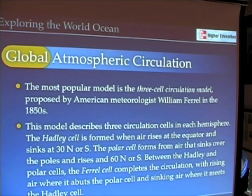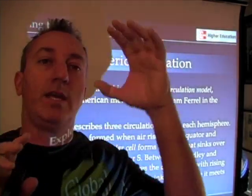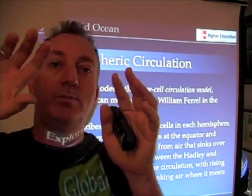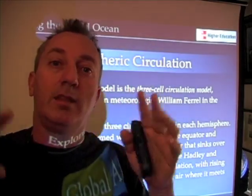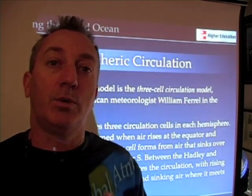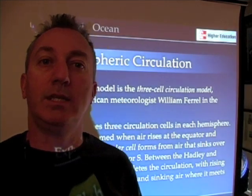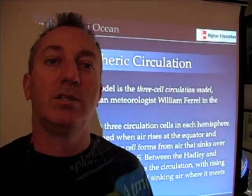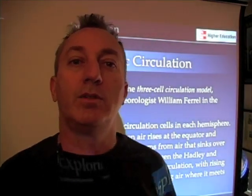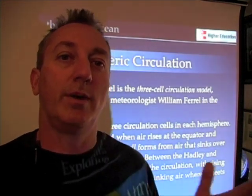This three-cell circulation model describes three regions of the atmosphere with circular motions from the tropics to mid-latitudes to the poles. They interact with each other, driven largely by rising air at the equator and sinking air at the poles. It's a very good description of the wind patterns we see, though it turns out to be too oversimplified.